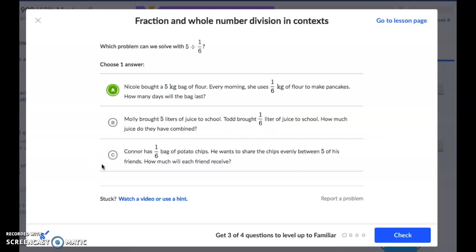And then in letter C, Connor has 1 sixth of a bag of potato chips and he wants to share the chips evenly between 5 of his friends. In this case, we would have 1 sixth divided by 5. That's why it's important to look at what's being split apart, because that's going to be our first number.